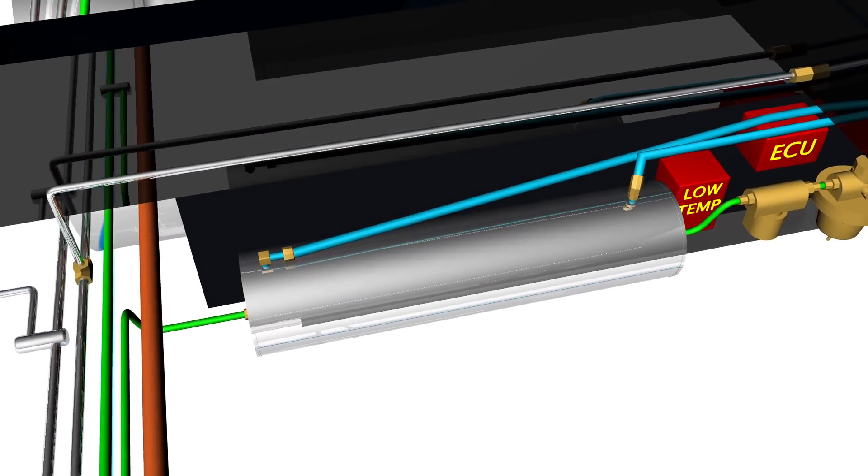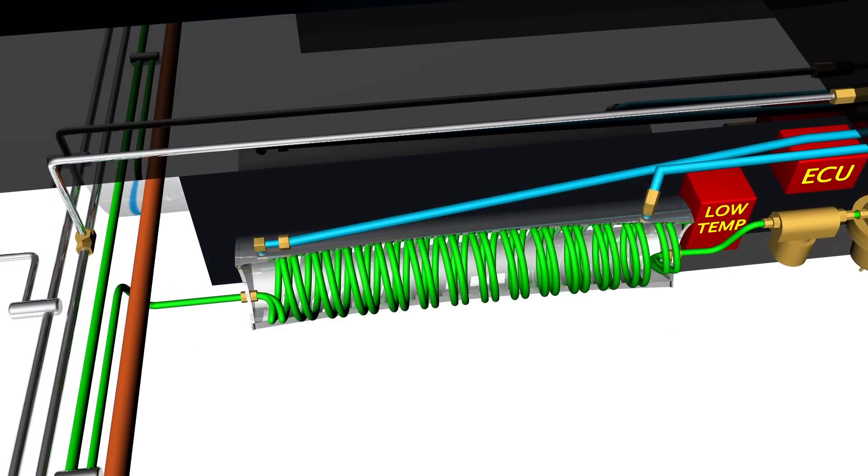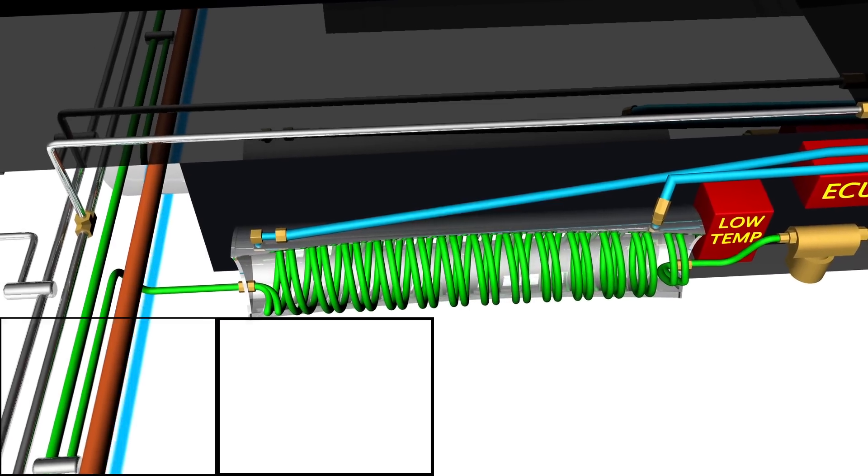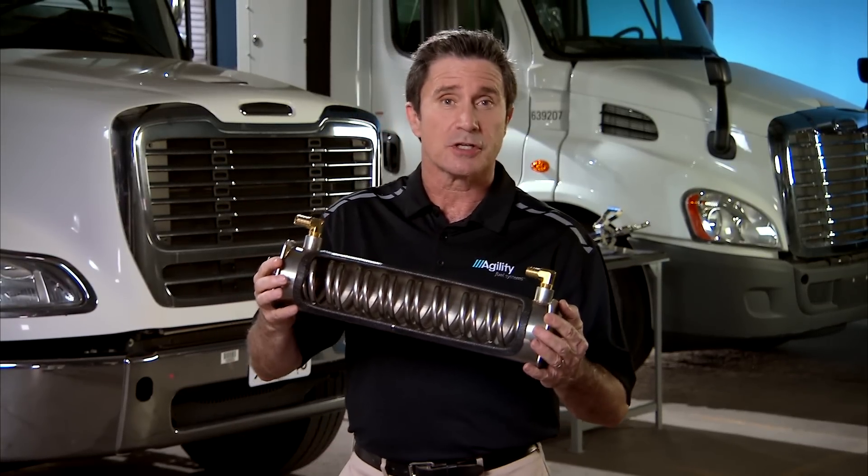When liquid fuel is being drawn from the tank, a heat exchanger is used to vaporize it into the gaseous form required by the engine. The heat exchanger circulates hot coolant from the engine to warm the LNG.